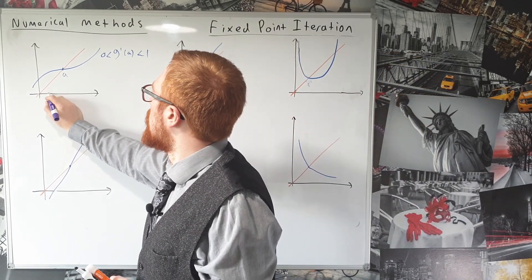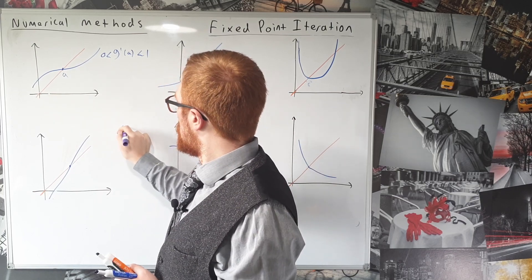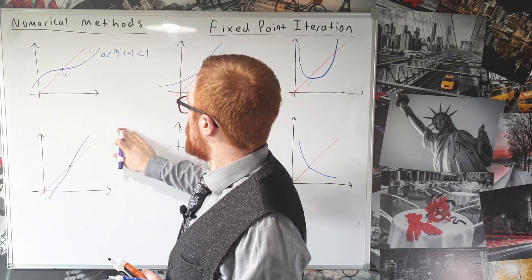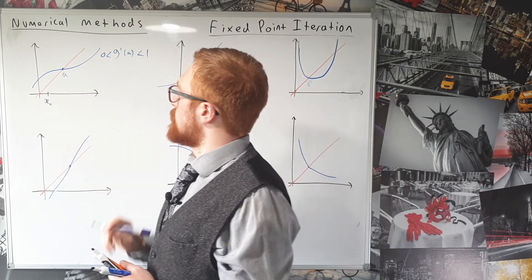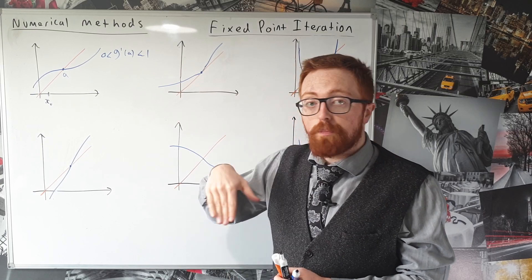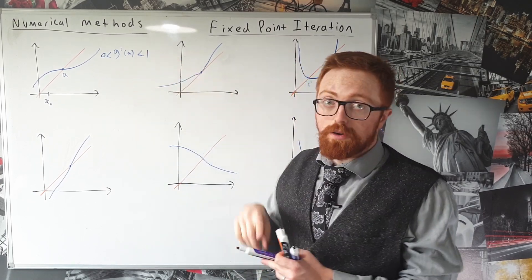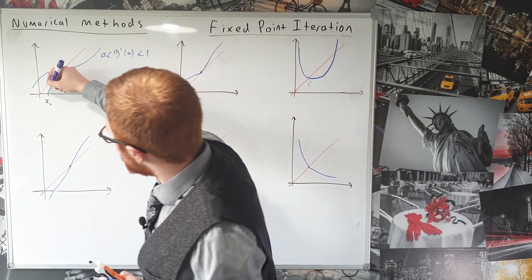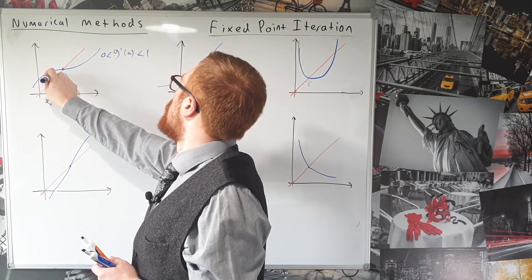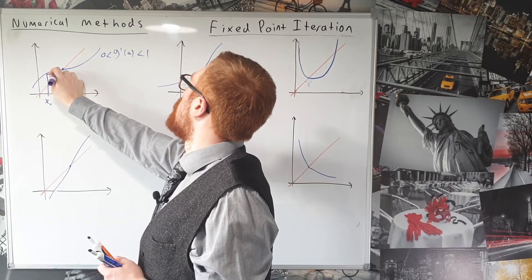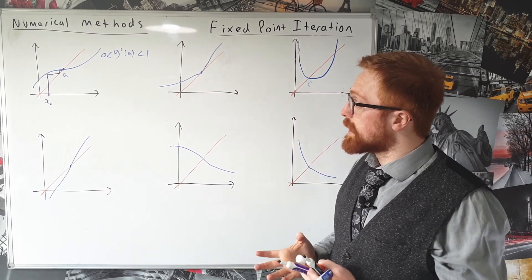So let's just pick any x naught. Let's go here. Okay, so remember we go up to the blue curve, and then across to the orange line, and up to the blue curve, and so on. So we go up to the blue curve, across to that line, up, across. And it looks like that's going to converge to a quite quickly.